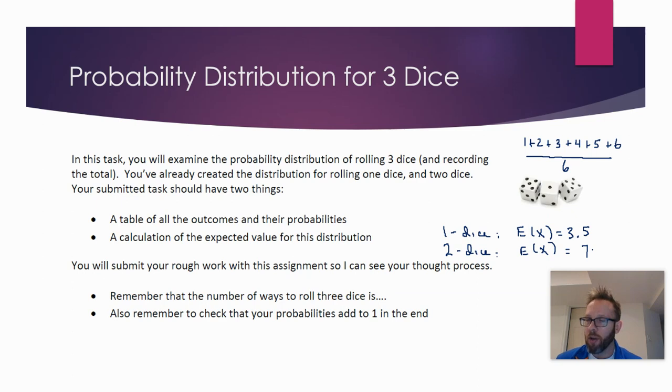So what you may notice is every dice has an average value of 3.5. So for one dice, that gives you 3.5. For two dice, that gives you 7. So for three dice, that definitely gives you a strong hint about what the expected value for three dice should be. So you can almost check your answer when you're done.